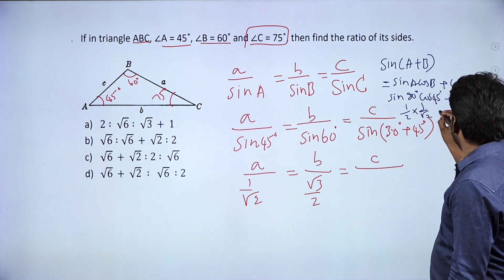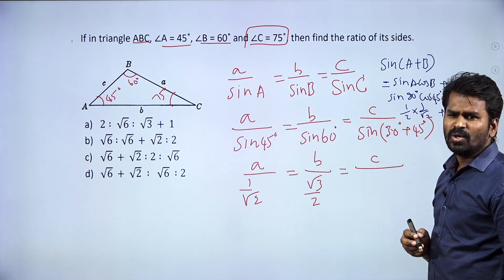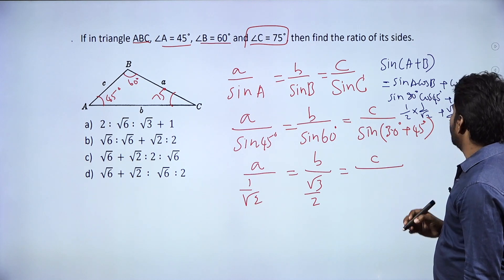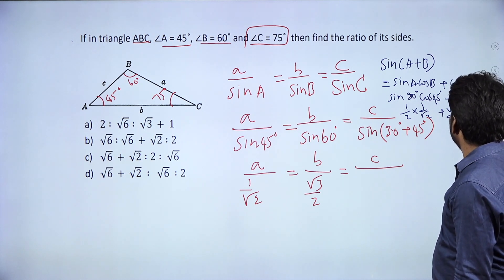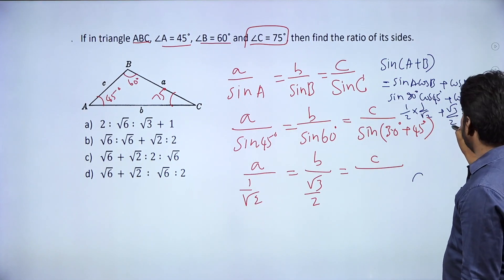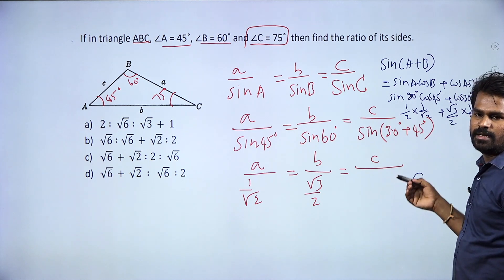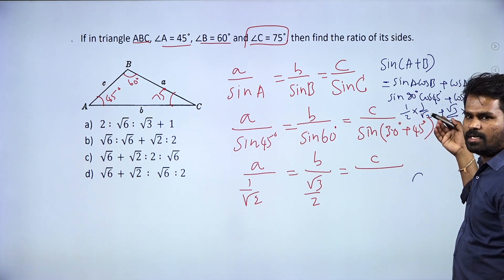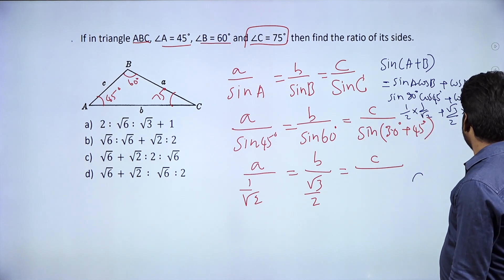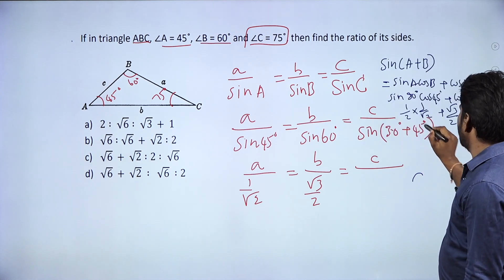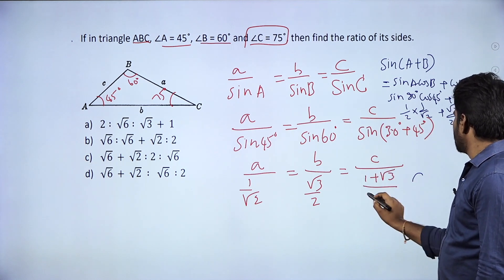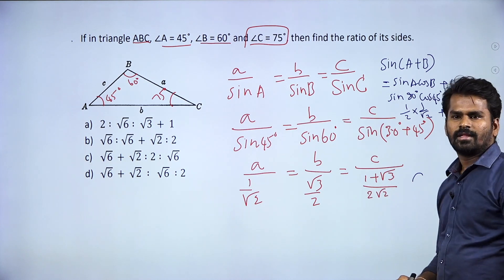Substituting: sin 30 is 1/2, cos 45 is 1/√2, cos 30 is √3/2, sin 45 is 1/√2. So sin 75 = (1/2)(1/√2) + (√3/2)(1/√2). The denominators are the same, so we add the numerators directly to get (1 + √3) by 2√2.